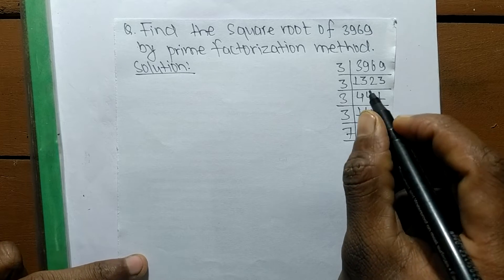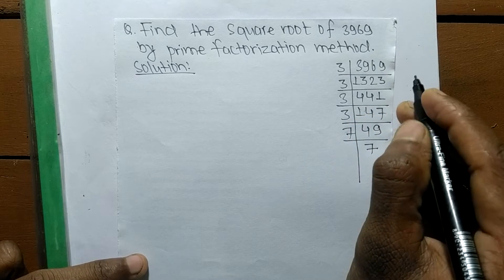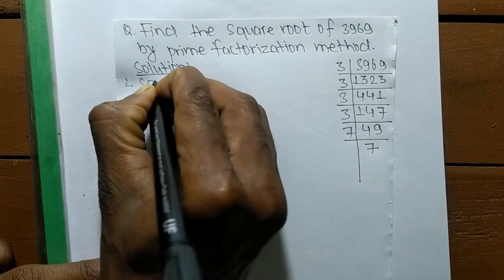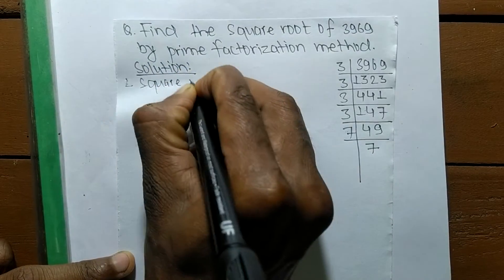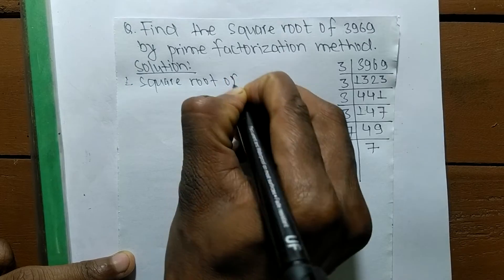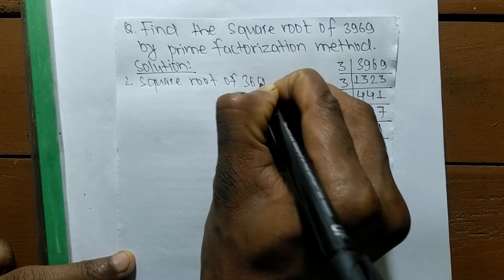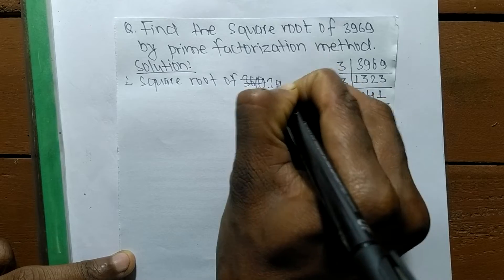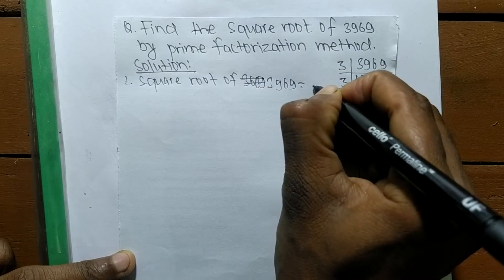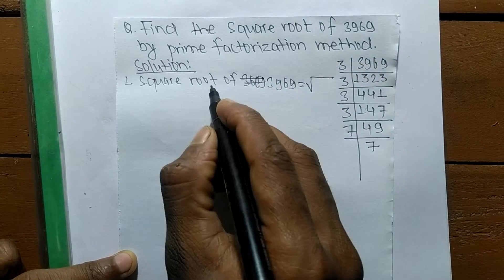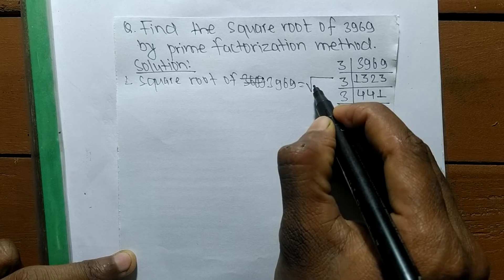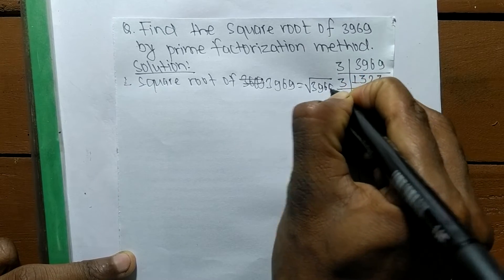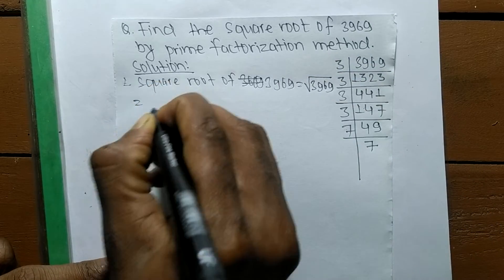We have now found the prime factors of 3969. Now we find the square root. This sign is the sign of a square root, and we are finding the square root of 3969.